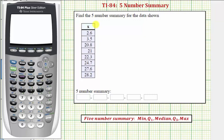Welcome to an example on how to use the one-variable stat tool on the TI-84 to determine the five-number summary of a data set. The five-number summary includes the minimum, the first quartile, the median, the third quartile, and the maximum.